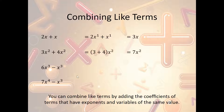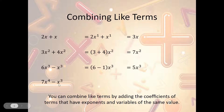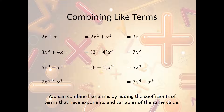We can do it with subtraction as well. So we have 6x³ minus x³ — same variable, same power — so 6 minus 1 is 5x³. Now we have 7x⁴ minus x³ — same variable, but they do not have the same power. So we cannot combine them. It just stays 7x⁴ minus x³.